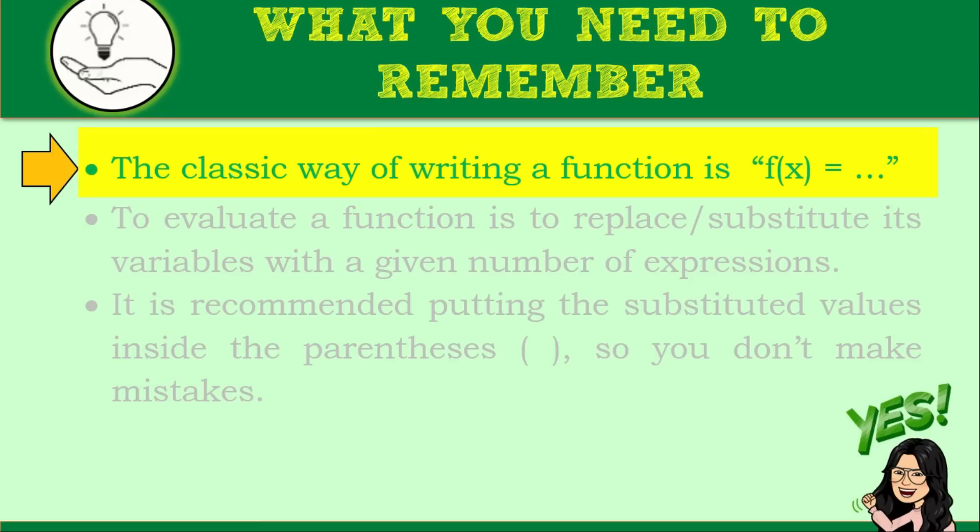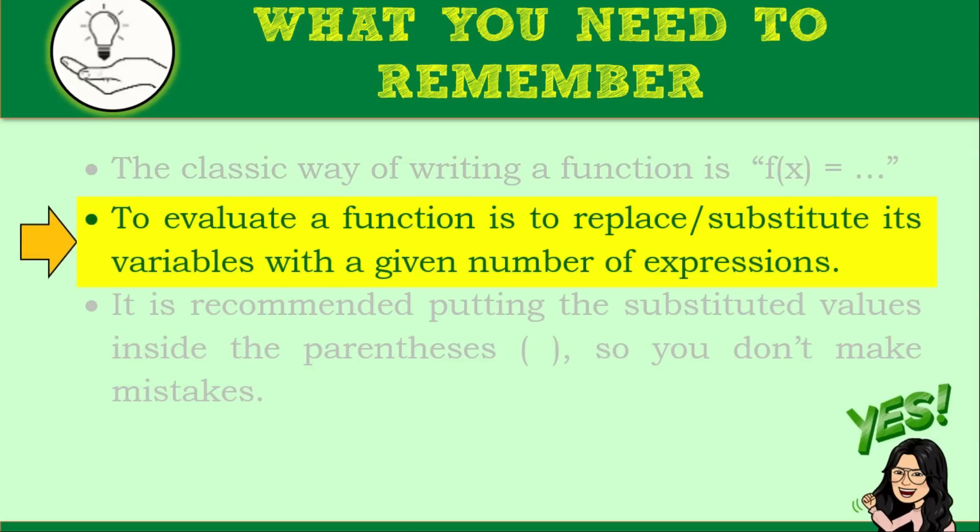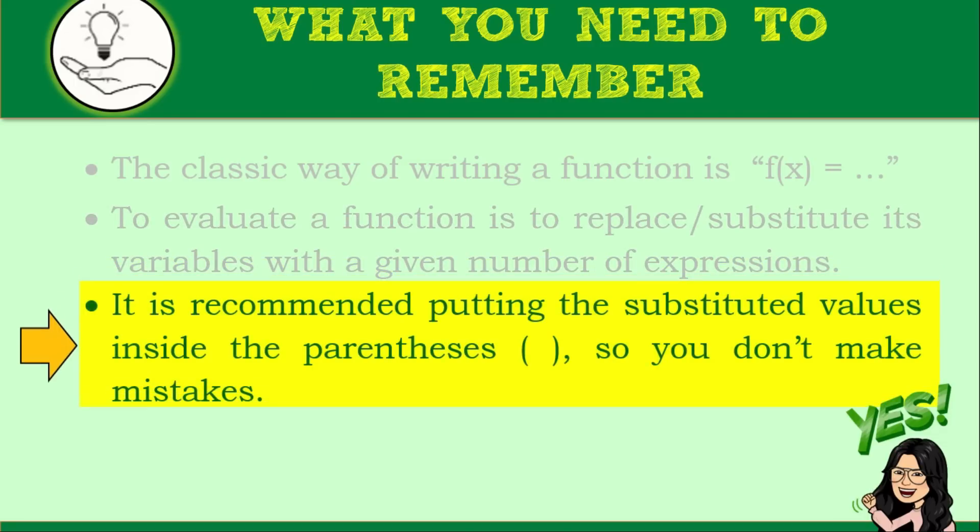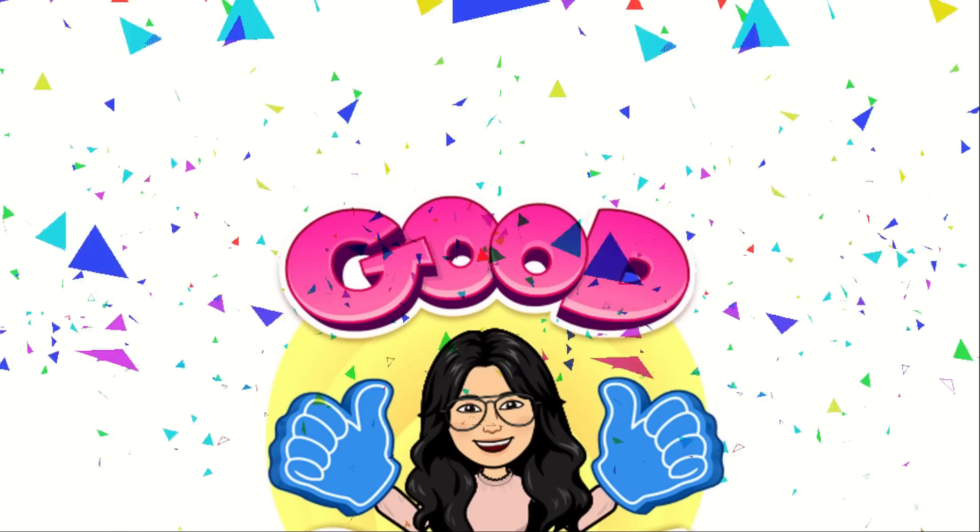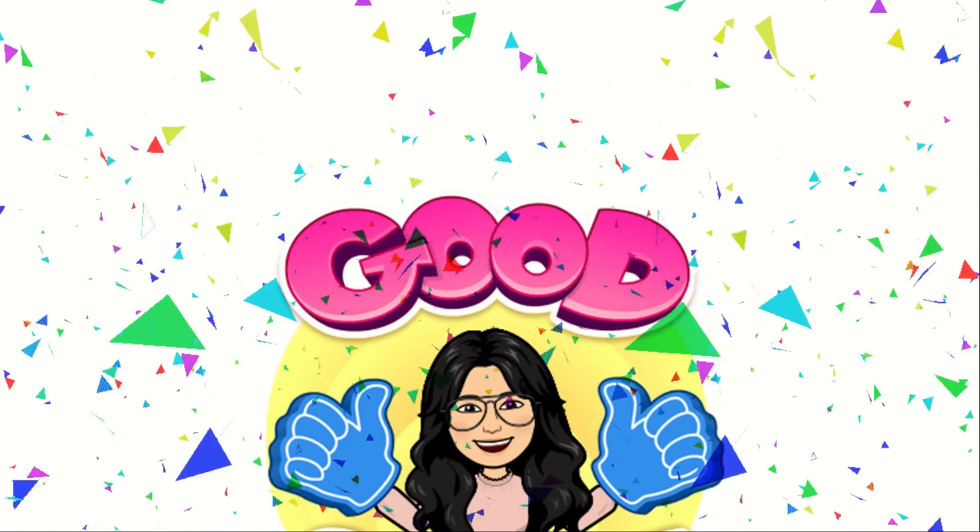The classical way of writing a function is f of x is equal to the given. You can also write it as g of x, h of x, or any other letters. To evaluate a function is to replace or substitute its variables with a given number of expressions. It is recommended putting the substituted values inside parentheses so you don't make mistakes. We are done with our second lesson. Good job for today and keep it up as we continue with our next lesson. See you then!